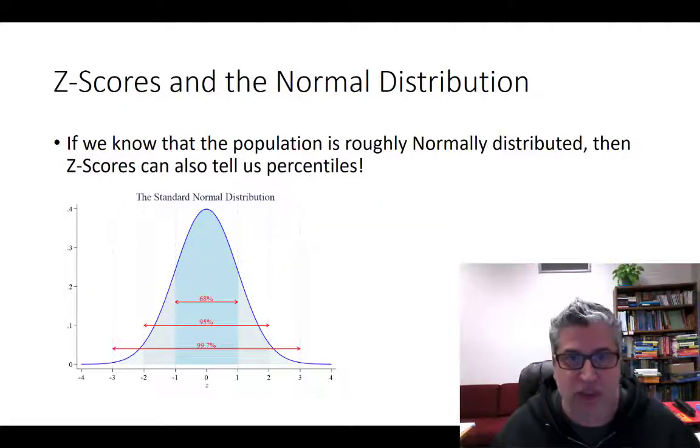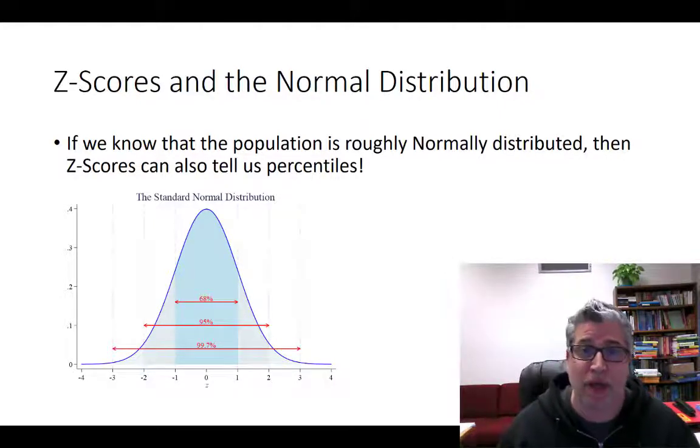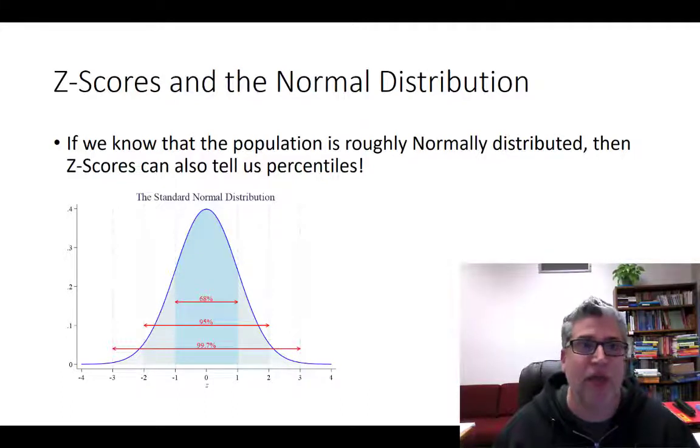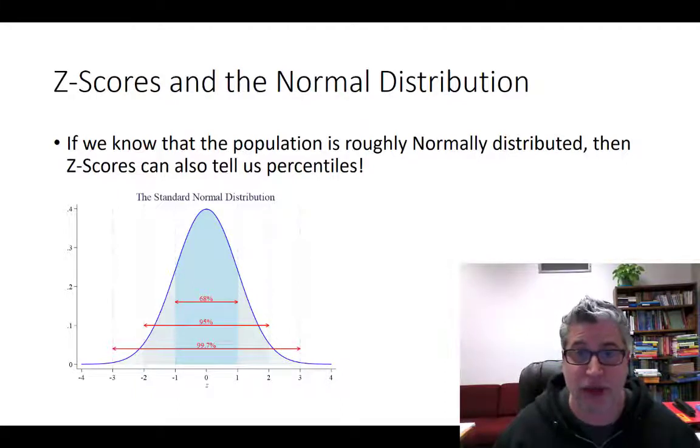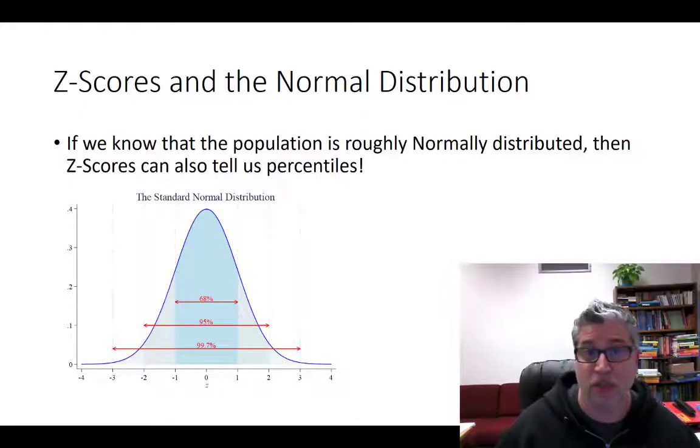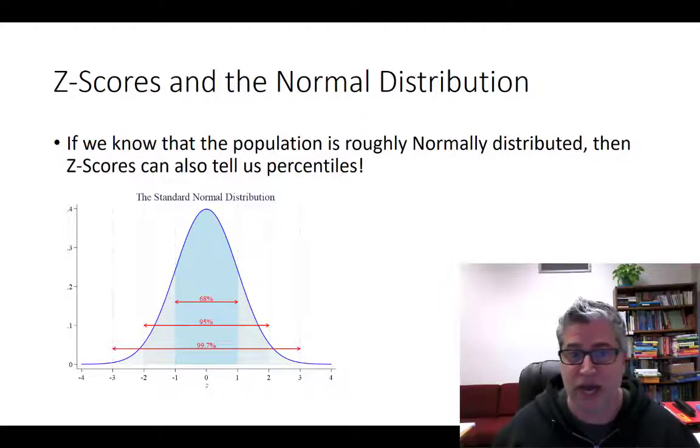Now, we can use z-scores to estimate percentiles. Actually, if you have your z-score, you can look up at a standard normal table and directly read off the percentiles. They're in the back of every single stats textbook that's out there. There are online calculators to convert from z-scores to percentiles.